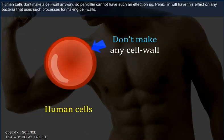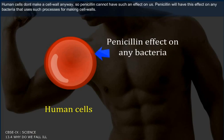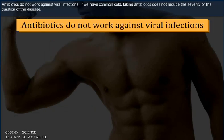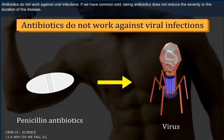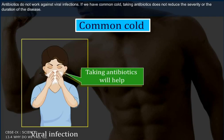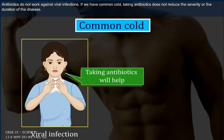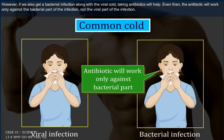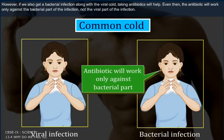Human cells don't make a cell wall anyway, so penicillin cannot have such an effect on us. Penicillin will have this effect on any bacteria that use such processes for making cell walls. Antibiotics do not work against viral infections. If we have a common cold, taking antibiotics does not reduce the severity or the duration of the disease. However, if we also get a bacterial infection along with the viral cold, taking antibiotics will help — but the antibiotic will work only against the bacterial part of the infection, not the viral infection.